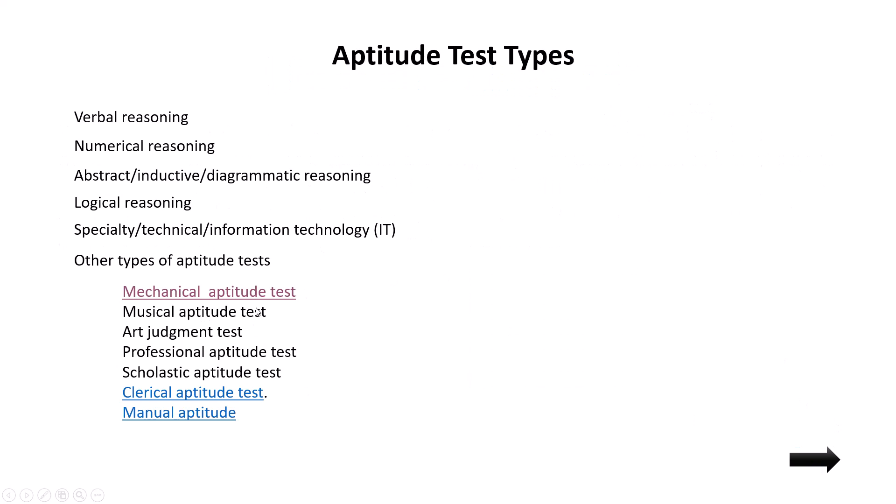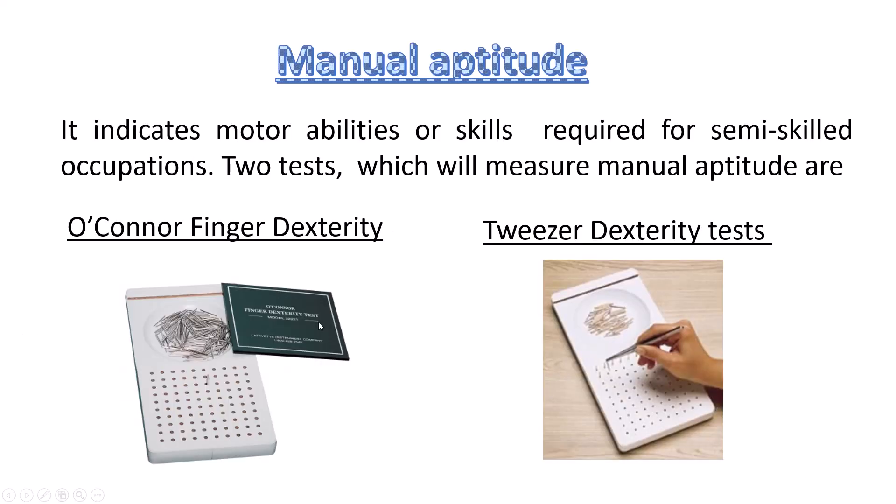Musical aptitude is related to music, and art judgment is related to arts. Professional aptitude tests are related to profession — if you are a nurse, doctor, or engineer, a special aptitude test is used for each. Scholastic aptitude tests assess school-related knowledge — what you have studied. Clerical aptitude tests relate to cognitive functions: how you judge a situation, your reasoning capacity, and your memory capacity.